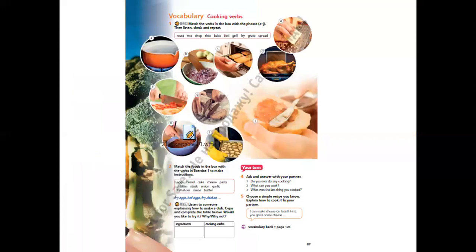Please turn to the next page, page 87, and look at Exercise 1: Cooking Verbs. You can see some pictures and new words. Please translate these words using your vocabularies at the end of the student's book. Let's go.